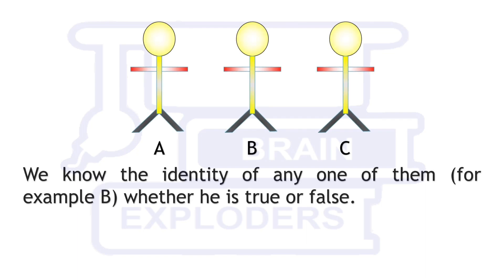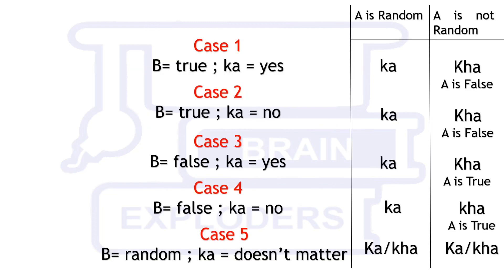Finally we know the identity of any one of them, for example B whether he is true or false. Now we will repeat our first question but this time we know his exact identity and he is not random also.